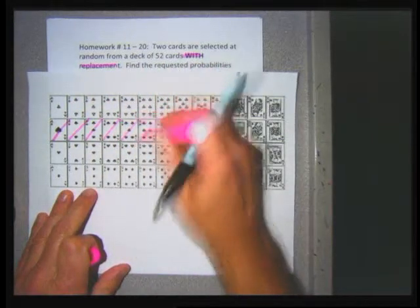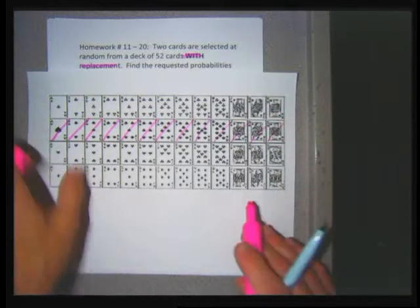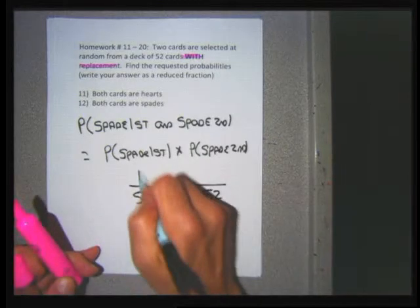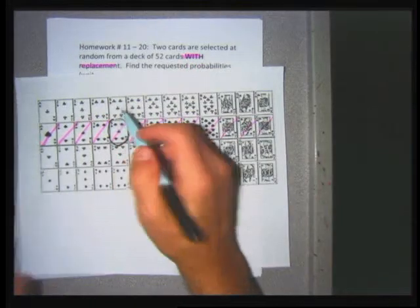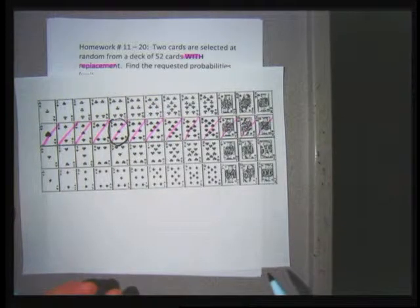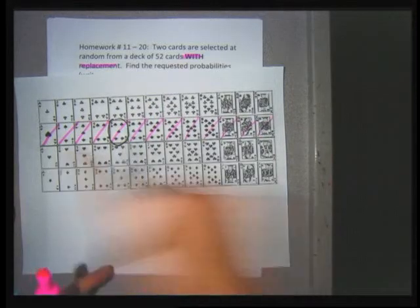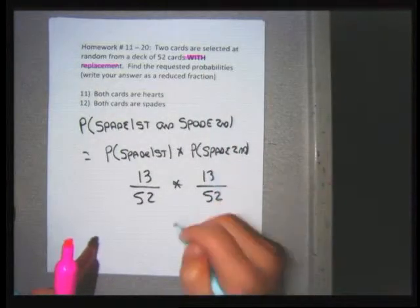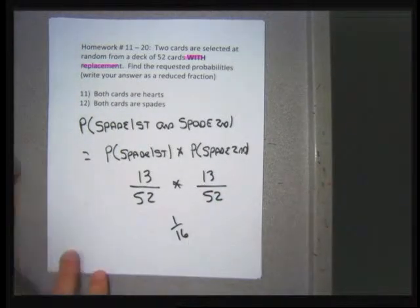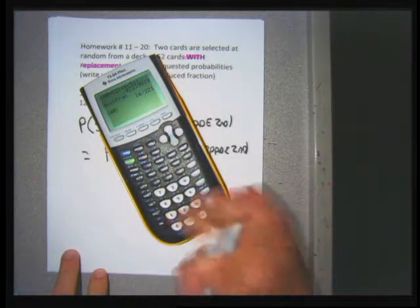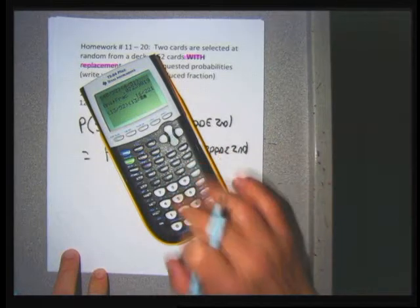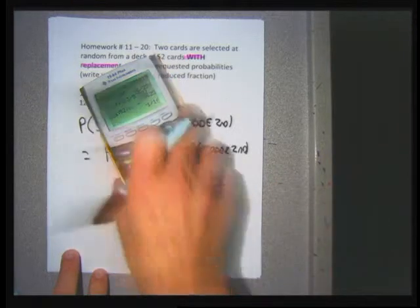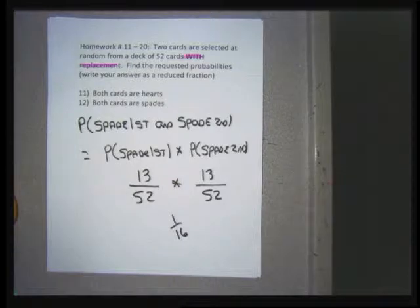For problem 12, I need the probability of getting a spade first and a spade second. Both denominators are 52 because with replacement I put the card back. Counting the spades gives 13. The first numerator is 13. Whatever spade I pick, I put it back, so for the second pick there are still 52 cards and still 13 spades — the second fraction is also 13 over 52. Computing (13/52) × (13/52) gives 1 over 16, since each fraction equals 1 over 4.